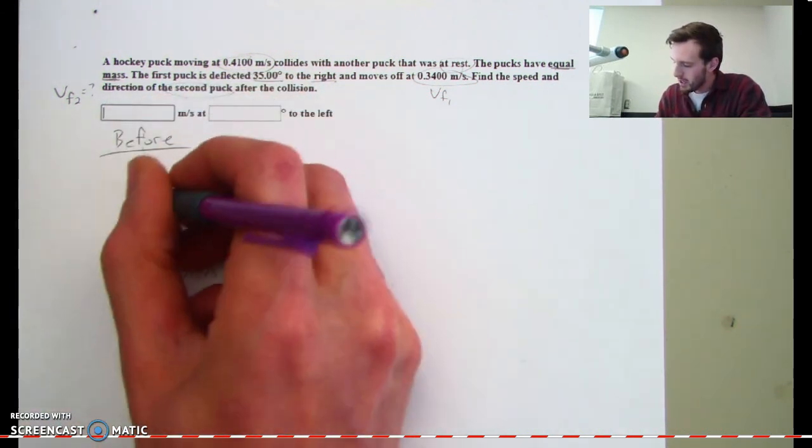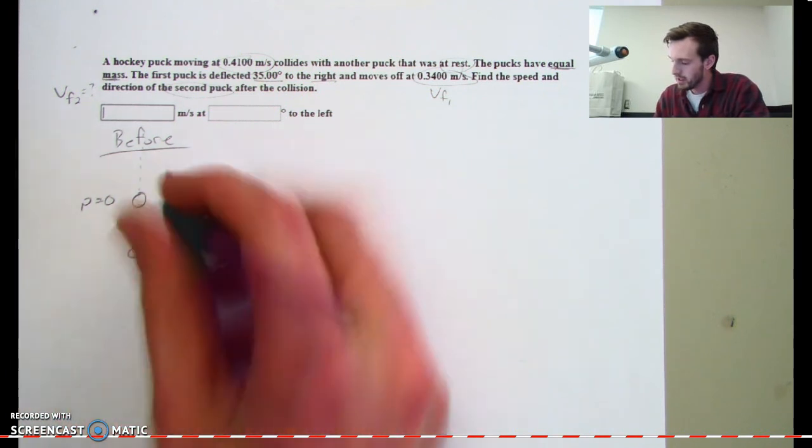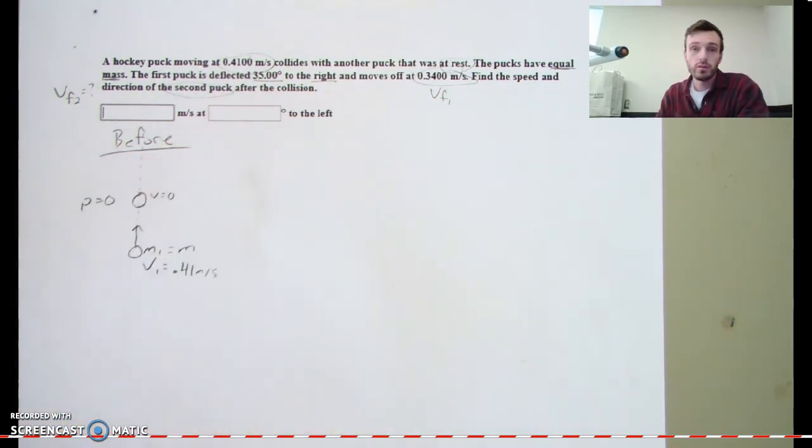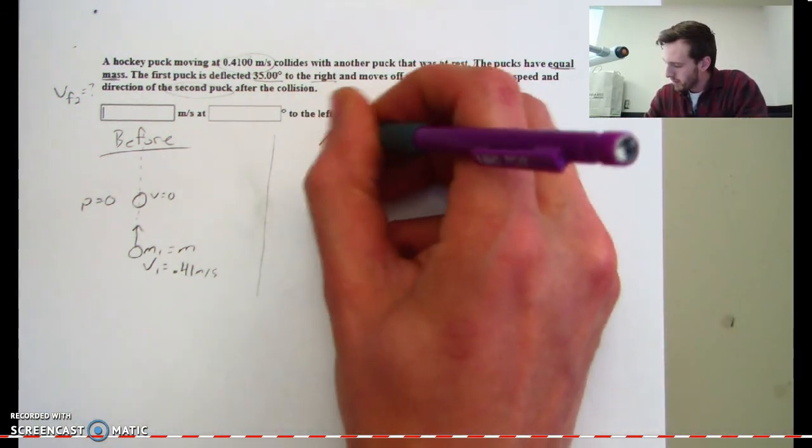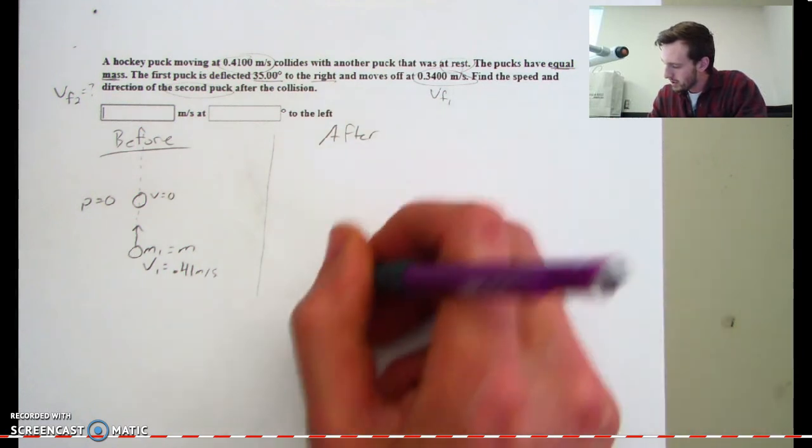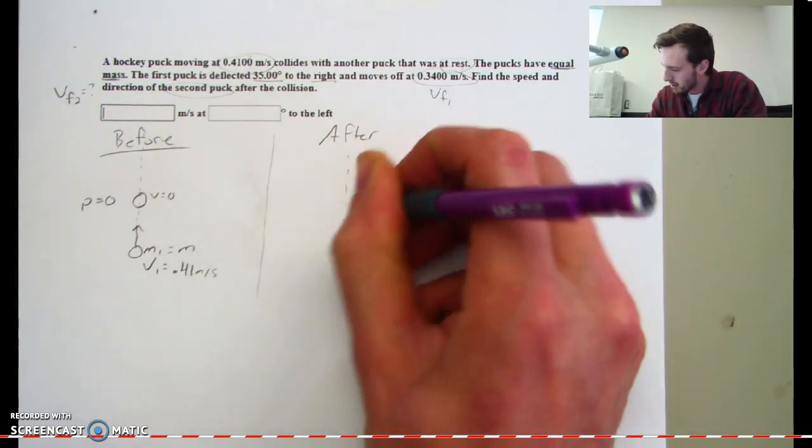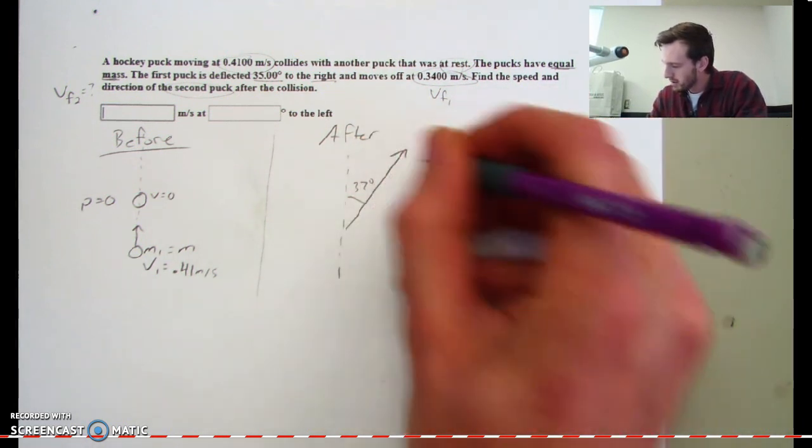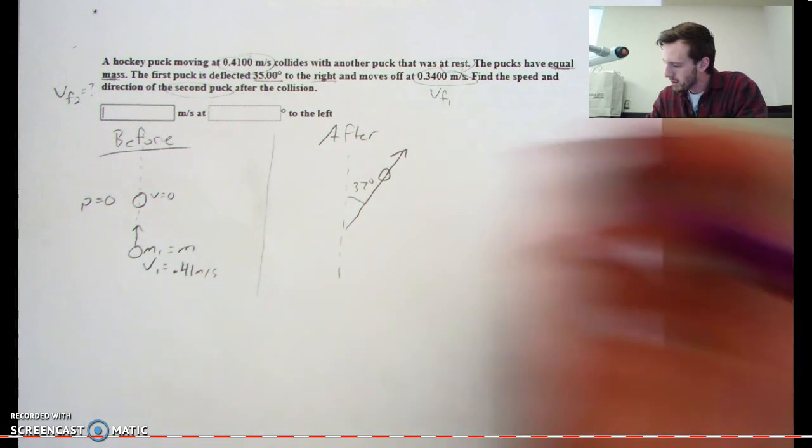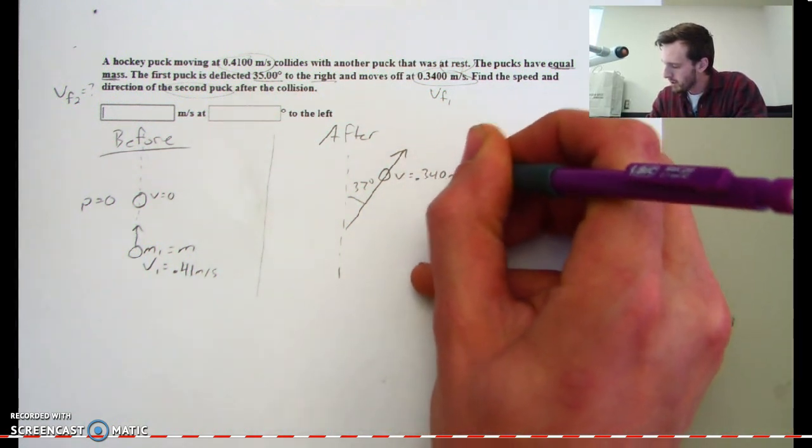And before this happens, of course, there would be zero momentum here in this puck, because that puck has a velocity of zero. The puck is at rest initially. So let's look at the after picture, because then we can start to set things up. We look at what's going on after the collision. It says that this puck that was coming in is now deflected off to the right at a 37 degree angle.